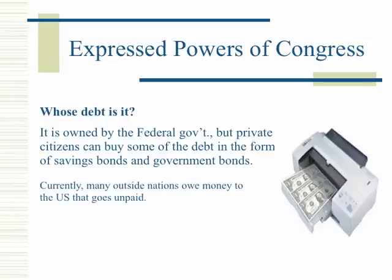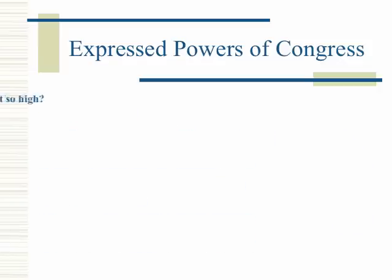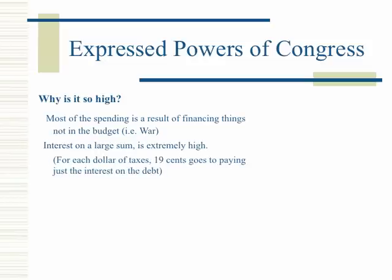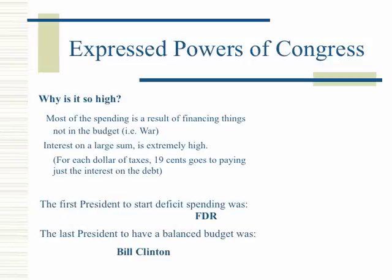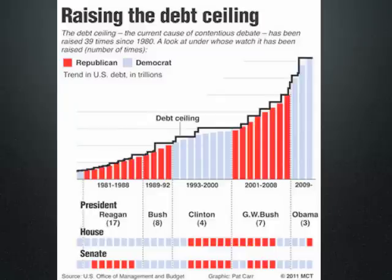Currently, many outside nations owe money to the United States that goes unpaid. Why can't we just print more money? Inflation — more supply lessens the value. Most of the spending is a result of financing things not in the budget, such as war. Interest on a large sum is extremely high; for each dollar of taxes, 19 cents goes to paying just the interest on the debt. The first president to start deficit spending was FDR. The last president to have a balanced budget was Bill Clinton. The debt ceiling has been raised 39 times since 1980, debated between Republicans and Democrats.